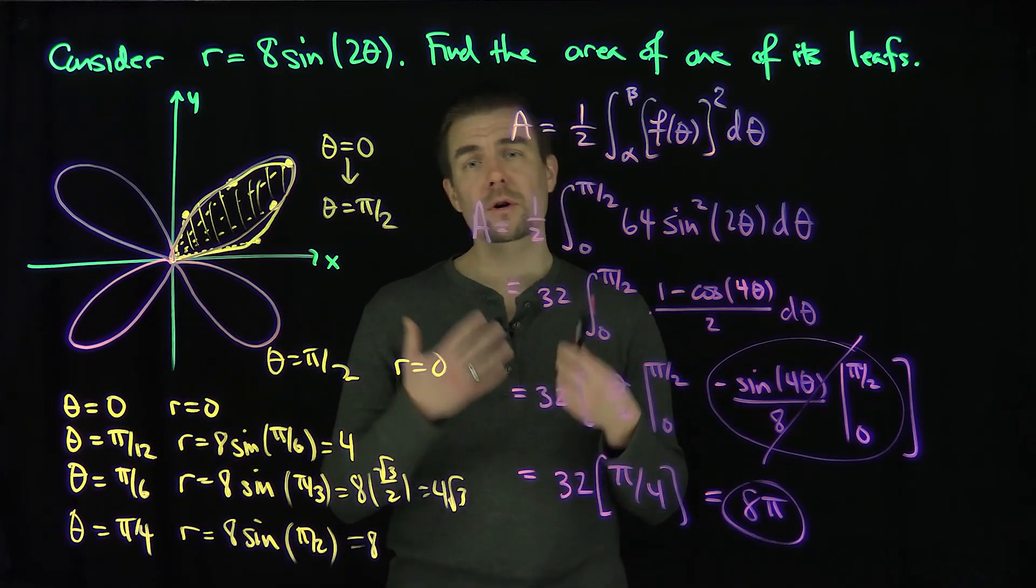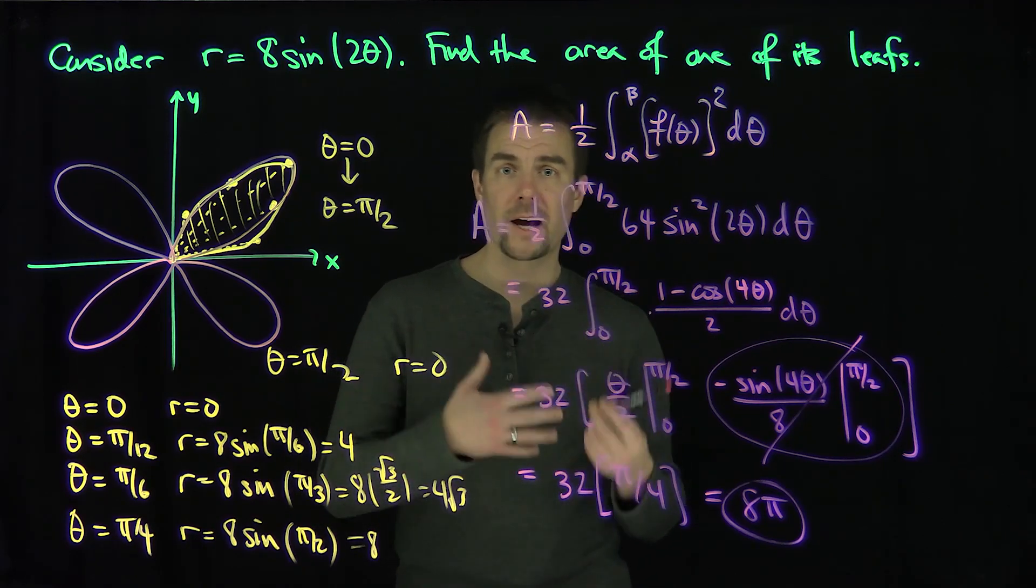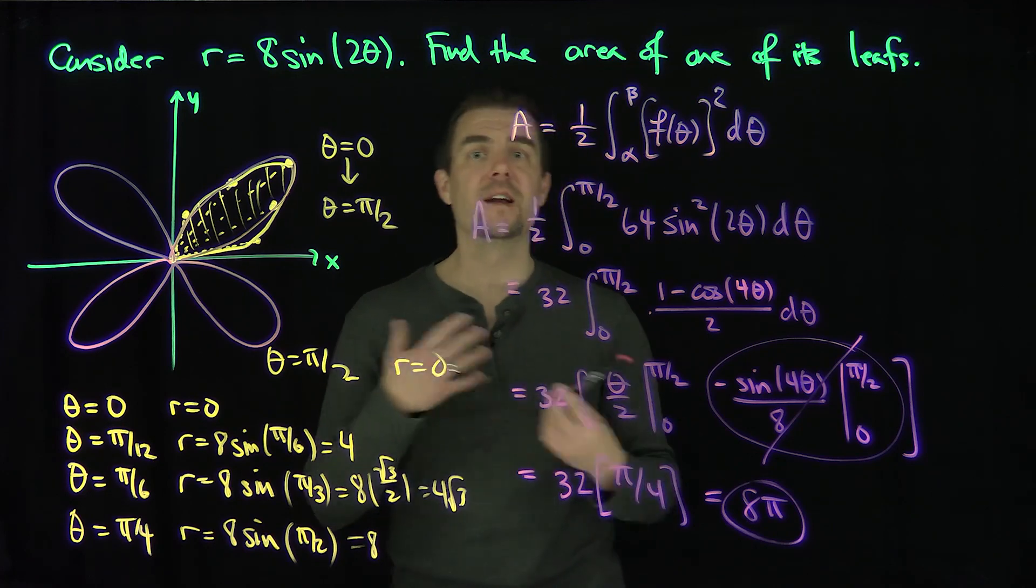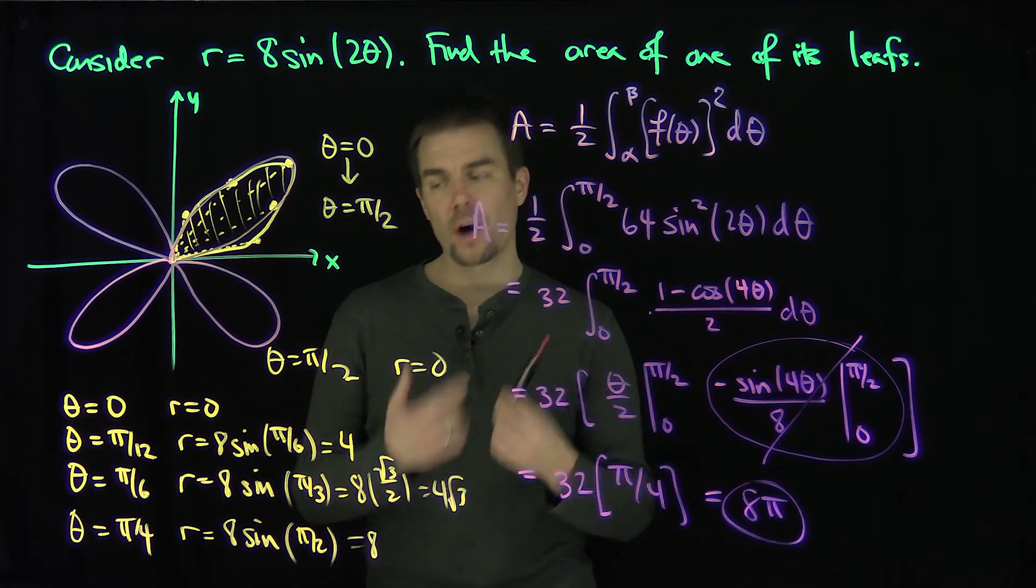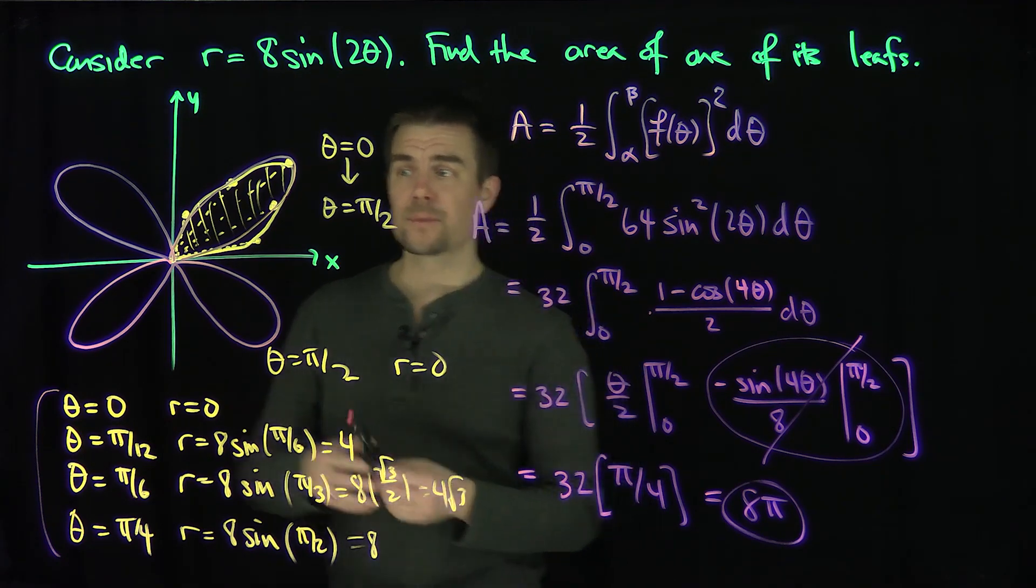So it's important to remember that when you're plotting a polar curve, trying to find the area between a polar curve and the polar axis, or inside a loop of a pedal, or inside a limaçon, or inside a cardioid, or any of these fancy polar curves, it's always important to plug in a whole bunch of angles to see how the curve develops.